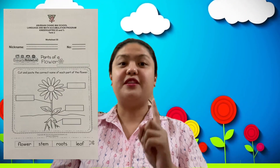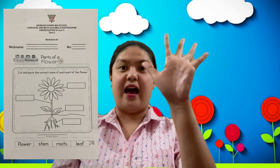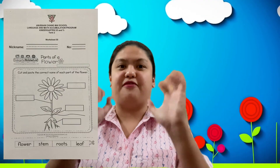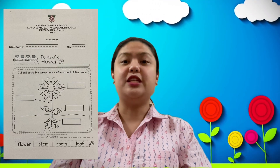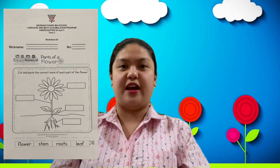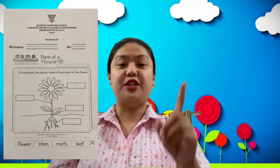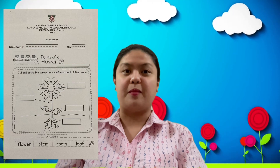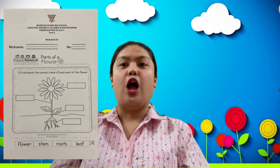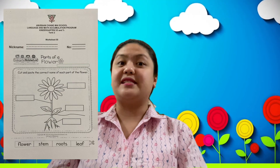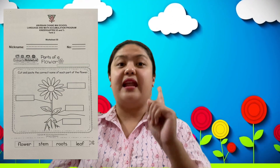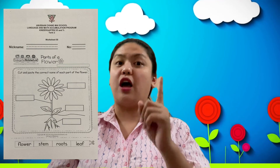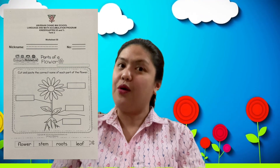Okay, now let's answer your worksheet number 55. Get your worksheet number 55 — don't forget to write your nickname and your number. Okay, it says: label the parts of a flower.